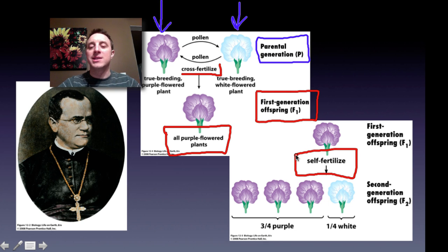So he found this very interesting. What happened to this white flower trait? Where did it go? So he went on, and his next experiments were to take two of these F1 plants and cross them. He allowed them to self-fertilize. Or, you know, you can also think of it as taking one F1 plant and allowing it to self-fertilize. And this gave rise to what we call the second generation offspring, or F2 plants. And what he saw in the F2 is very interesting.